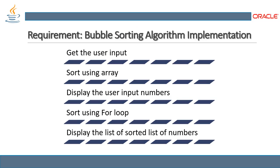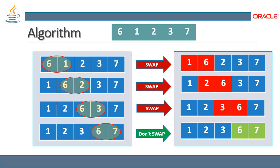The requirements for the bubble sort algorithm implementation are: first, we need to get user input and decide what data type to use. Since this is a simple sorting algorithm, we are going to use a single data type with an array. We will implement it using an array, display the user input numbers, put the input into an array, sort it using a for loop, and display the sorted list of numbers.